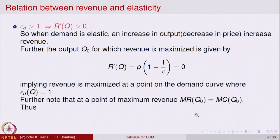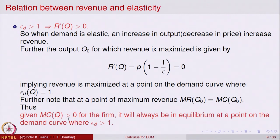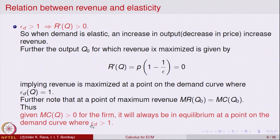Additionally, we know from earlier that at the profit-maximizing quantity Q0, the marginal of revenue equals the marginal of cost. Since marginal of cost is positive, this implies that R prime(Q) must be positive at equilibrium — meaning the firm operates at a point on the demand curve where epsilon is greater than or equal to 1. This is another consequence derived from using the derivative in economic analysis.